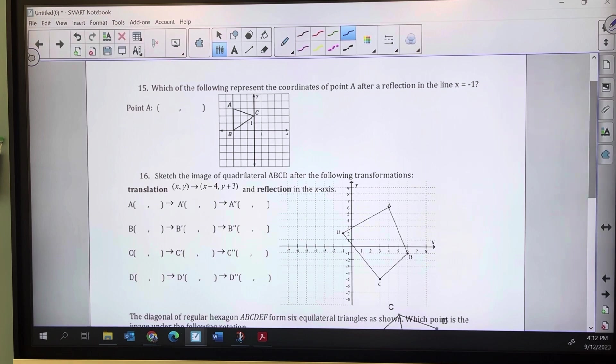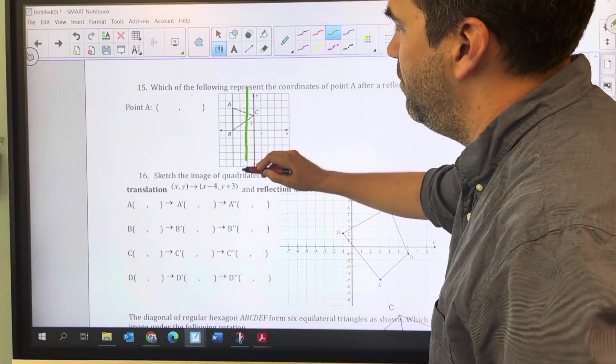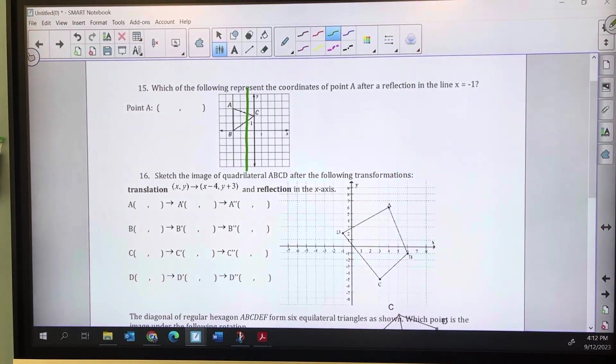Number 15: we have a reflection in the line x equals negative 1. I'm going to draw that line to make sure I'm thinking about the right line. All I have to worry about here is point A.